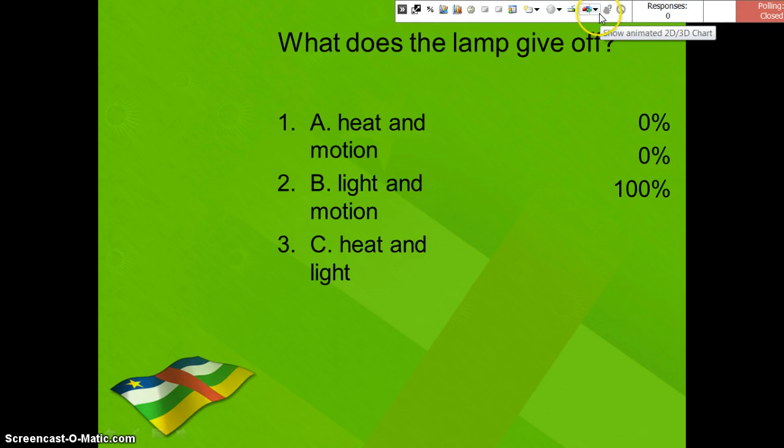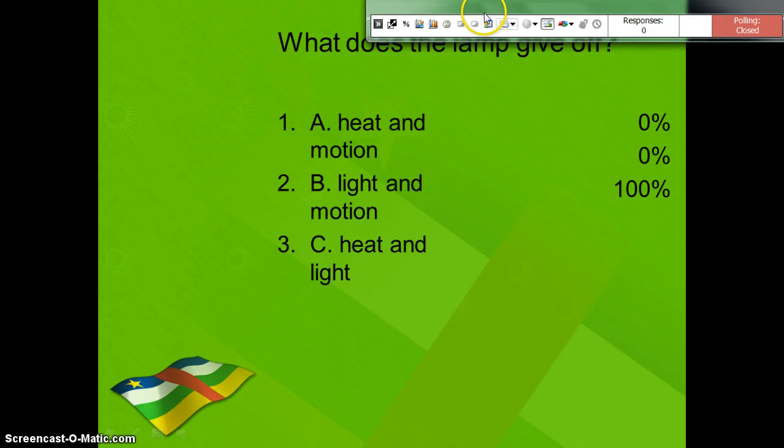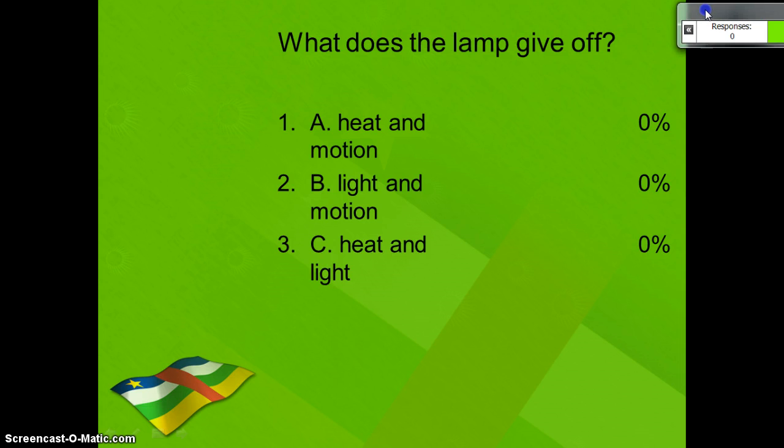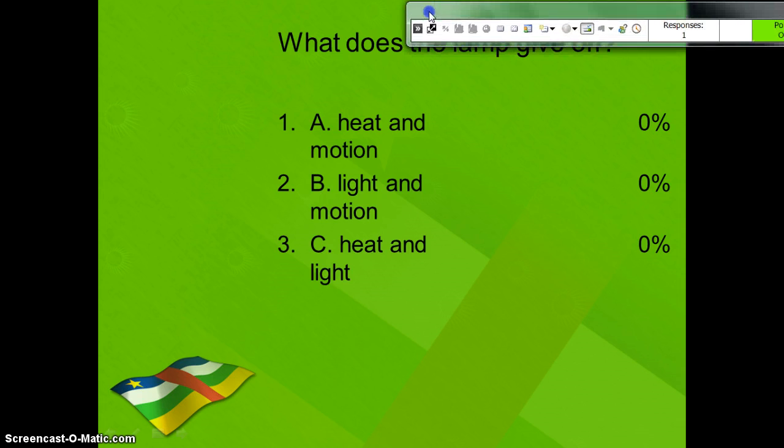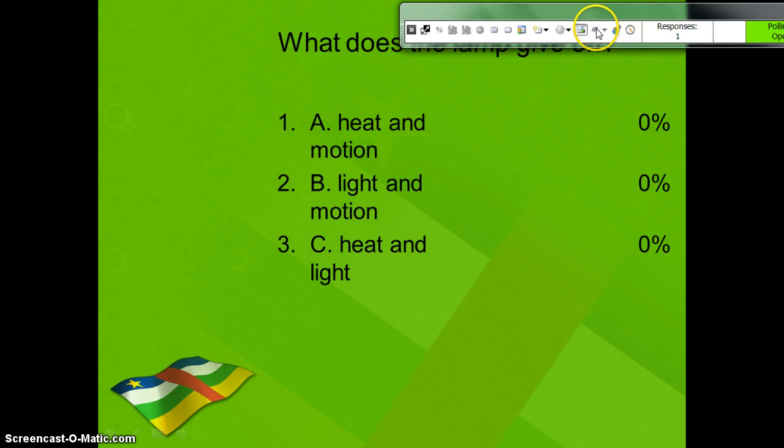The poll here is supposed to be open. So I need to see why it is not open. There we go. So now the poll is open. Just need to push this back into its place. The student will answer the question, what does the lamp give off? They will simply press three or C and that will pretty much take care of that question. I would then go on to the next question. You could close the poll or you could go on to the next question.